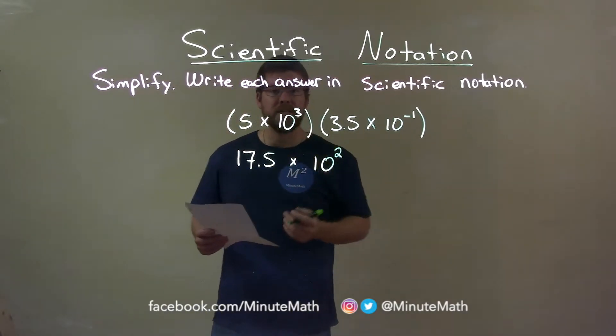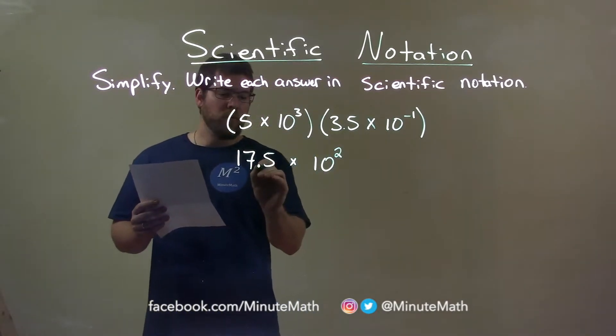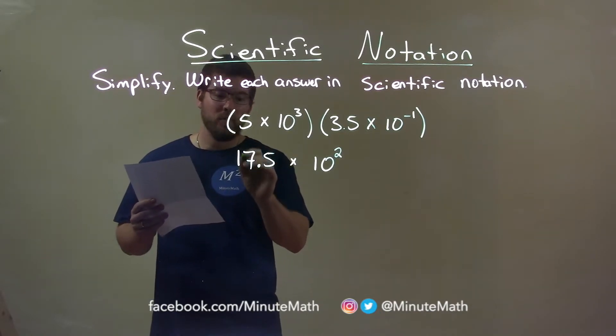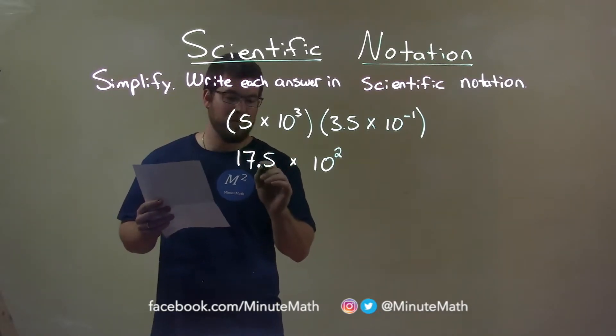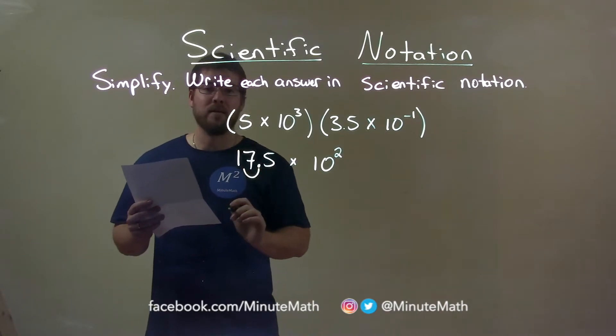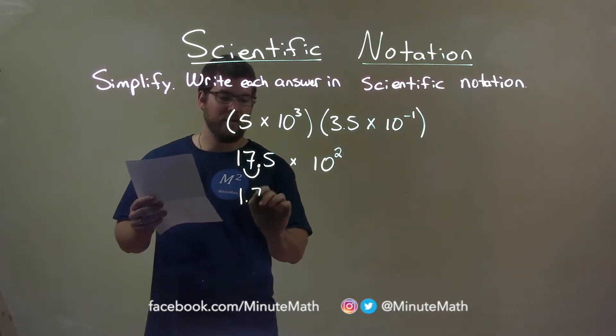Well, this still isn't in scientific notation. Our rules say that this decimal place needs to be moved one spot to the left, where this one is now in the ones position. So, bring it one spot to the left, and we have 1.75.